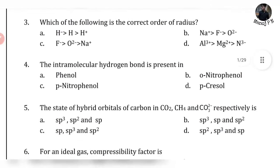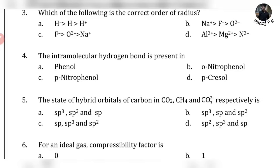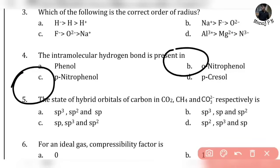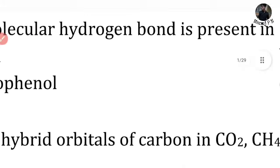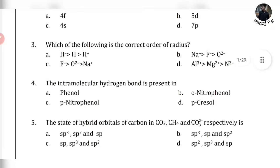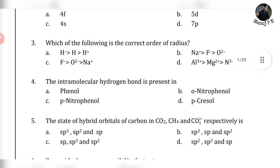Next question: the intermolecular hydrogen bond is present in — where is the intermolecular bond present? I guarantee you, to tackle these questions you need to know the structures of everything — phenol, nitrophenol, cresol. Here the options are B and C involving nitrophenol. We have to identify where the intermolecular hydrogen bond exists.